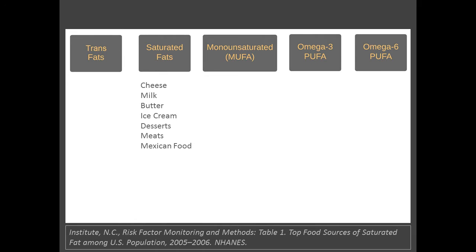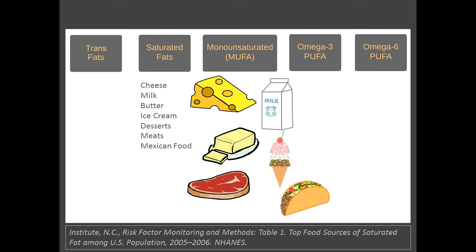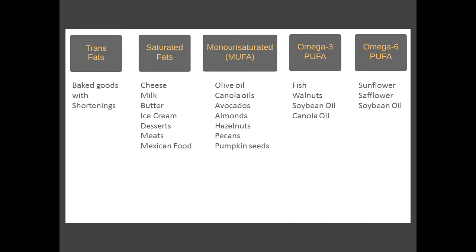Let's fill in some common foods that have a lot of the various fatty acids. The biggest sources of saturated fat in the U.S. come from cheese especially from pizza, milk, butter, ice cream and desserts, meat products of all types, and Mexican food. You also see other common foods that are high in MUFAs, PUFAs, trans fats, and cholesterol. Listing foods is a better approach, but it's still problematic because almost all foods contain multiple types of fats in various quantities.